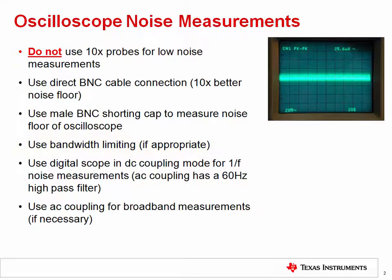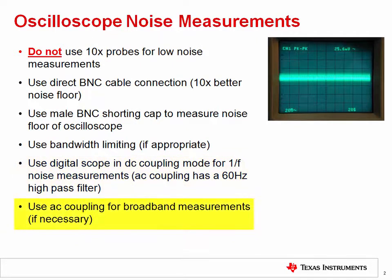1/f noise is normally measured from 0.1 to 10 hertz, requiring a DC-coupled digital scope set on a very large time scale, typically one second per division. It is important to make sure that the scope is DC coupled for 1/f measurements, since the typical built-in AC coupling circuit uses a 60 Hz high-pass filter, which doesn't properly show flicker noise. For broadband noise measurements, on the other hand, you can use AC coupling, which eliminates the DC offset and allows for the best measurement range.